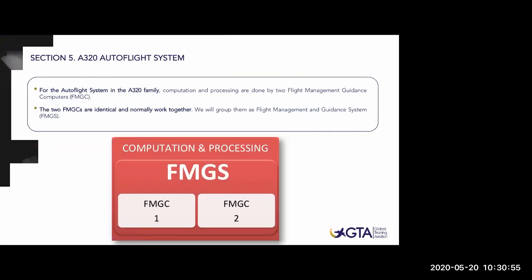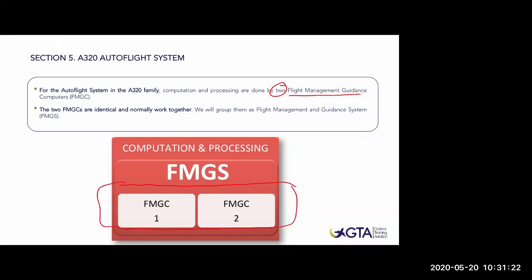Let's go into section five: the A320 autoflight system. For the autoflight system in the A320 family, computation and processing are done by two flight management guidance computers - two FMGCs. The two FMGCs are identical, and this is fundamental to the Airbus philosophy - they are identical and normally work together. We group them as the Flight Management and Guidance System - FMGS. So I have two FMGCs, identical and working together, and the entire group is called FMGS, in charge of computation and processing.